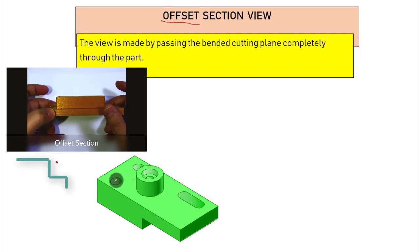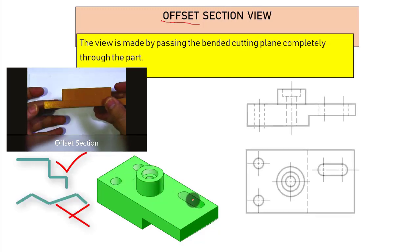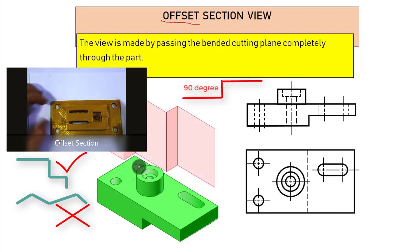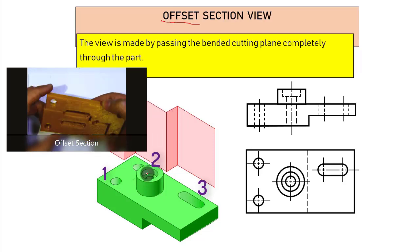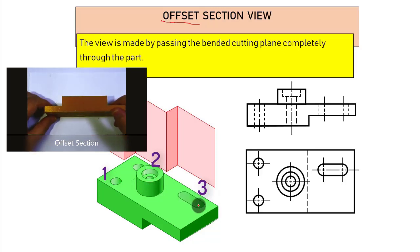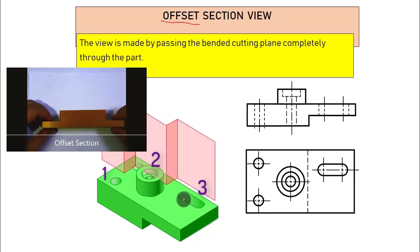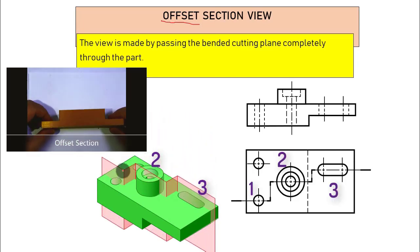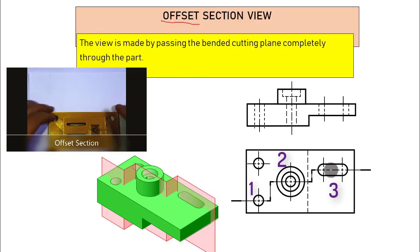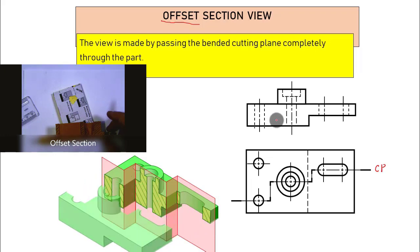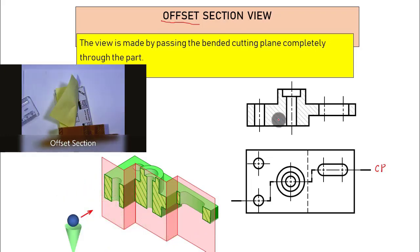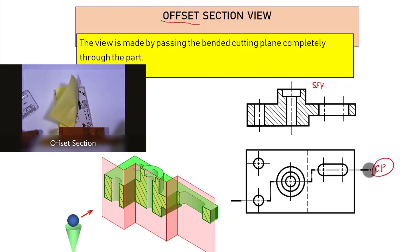When passing through features for an offset section, the rule is to move only in horizontal and vertical lines — you cannot use angled or arc movements. Looking at the example, the slot, the big hole, and the small hole are all captured. Hidden lines change to visible lines. When you look from inside after removing one part, you see first feature, second feature, and third feature.